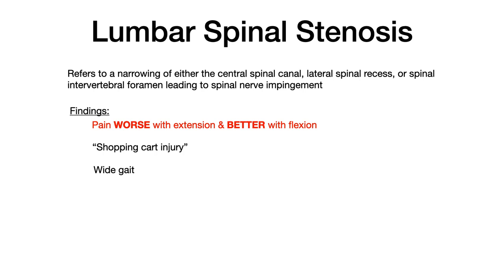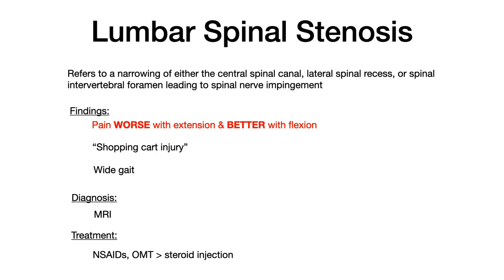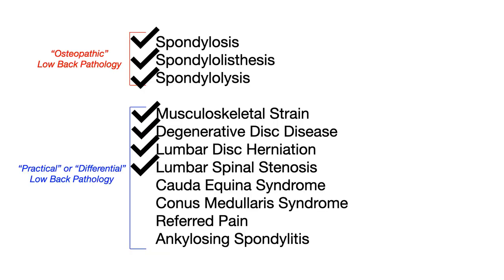Anything that puts the spine into extension makes pain worse; anything that puts the spine into flexion makes pain better. It might not be described as a shopping cart — it might say the patient prefers to bend forward or that pain worsens reaching backwards overhead. A wide gait may also be seen. Diagnosis is made with MRI. Treatment is initially conservative with NSAIDs, acetaminophen, and OMT; if that doesn't work, patients can consider a steroid injection.